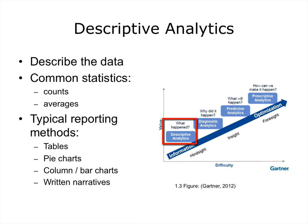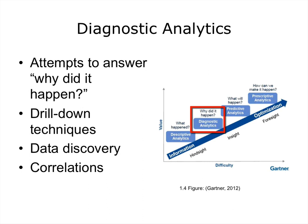Descriptive analytics are the simplest type and simply describe the data. Common statistics are used, such as the number of laboratory tests, the average age of patients, or the average length of stay in the hospital for patients with a particular diagnosis. Descriptive analytics are often presented as pie charts, bar or column charts, tables, or written narratives. Gartner defines diagnostic analytics as a form of advanced analytics which examines data or content to answer the question, why did it happen? Tools used for diagnostic analytics include drill-down techniques, data discovery, and correlations.